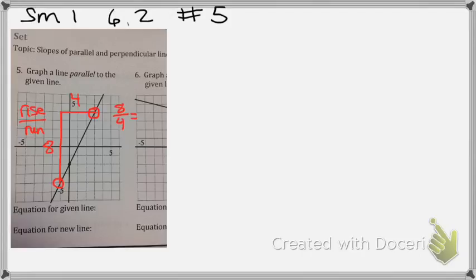So I would have eight fourths. Can I reduce eight fourths? That would be two over one, which would just be two.